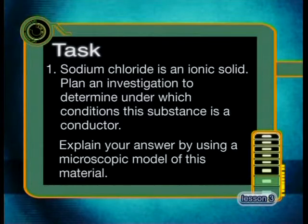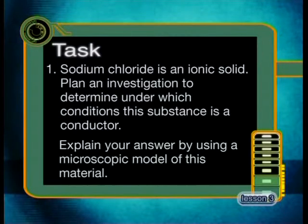Now that we have looked carefully at semiconductors, I want you to complete an investigation for your task today. Sodium chloride is an ionic solid. Plan an investigation to determine under which conditions this substance is a conductor, and explain your answer using a microscopic model of this material. In our final lesson, we will carefully explore what happens when N- and P-type semiconductors are joined together, and how this type of junction is used in electronic components called diodes. See you then.